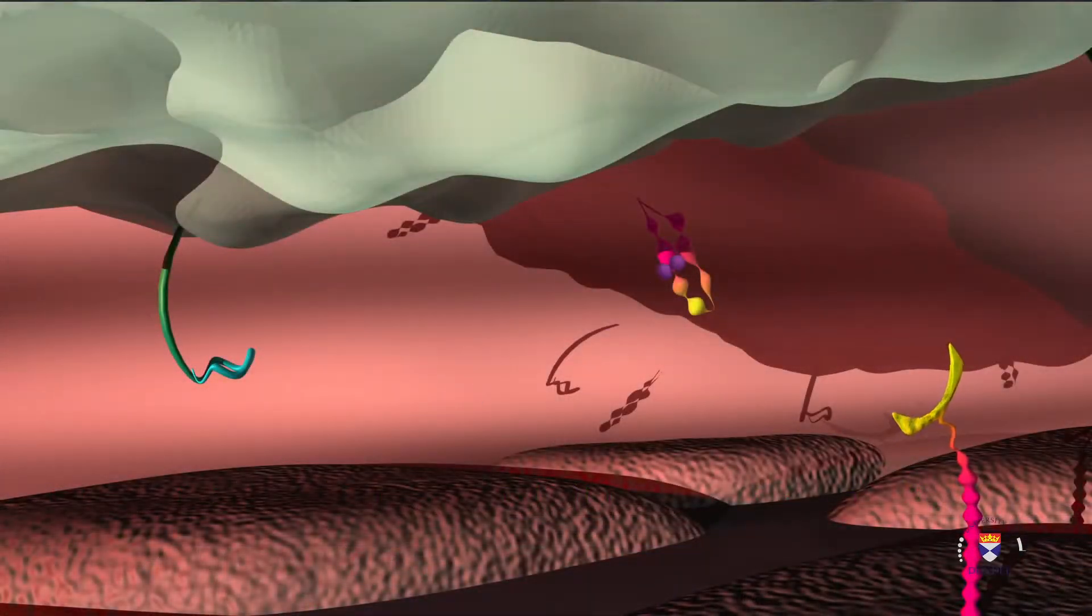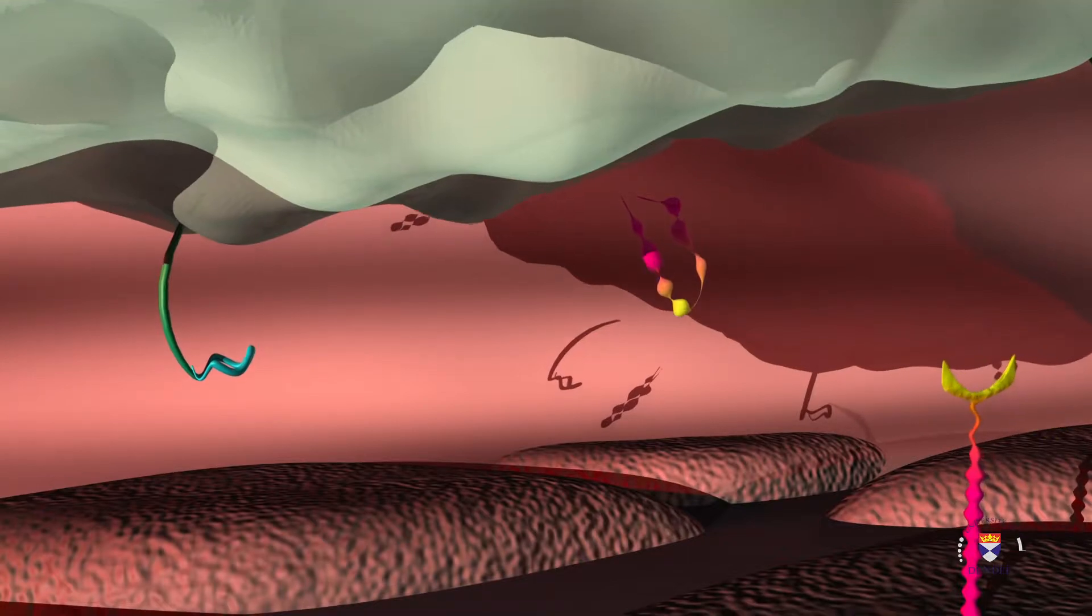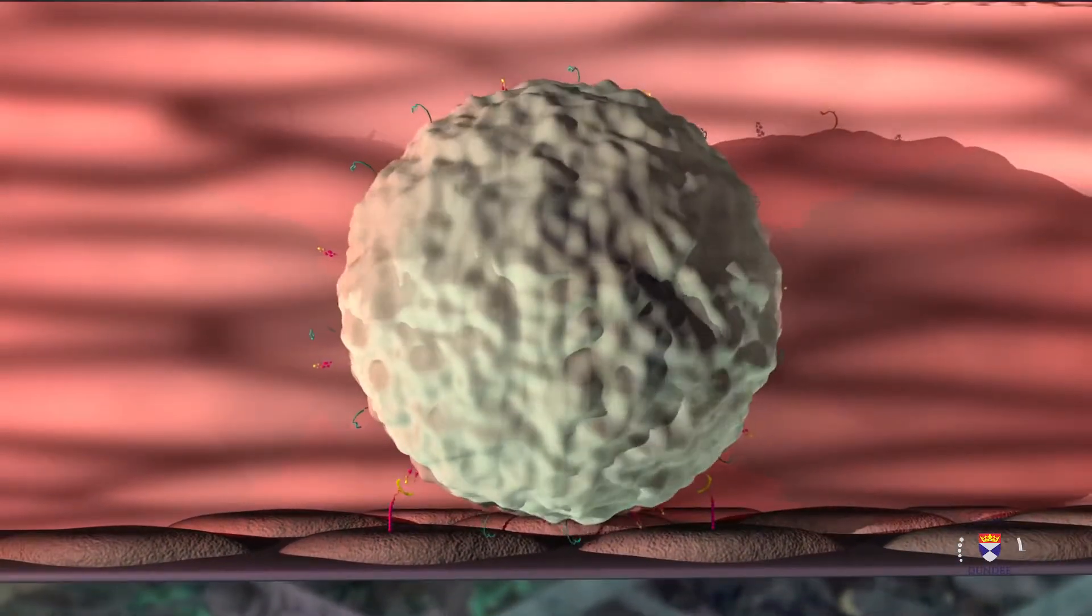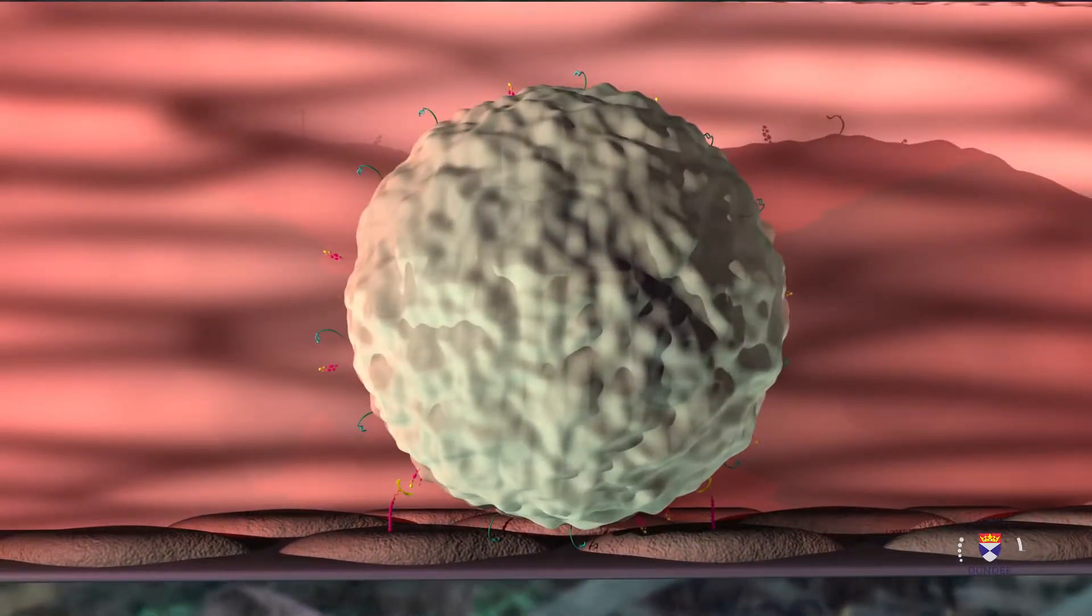Chemokines will bind with the leukocyte to activate it, which induces a change in the structure of integrin. This change makes it bind ICAM tightly. The leukocyte stops rolling once it's tightly bound and flattens against the vessel wall.